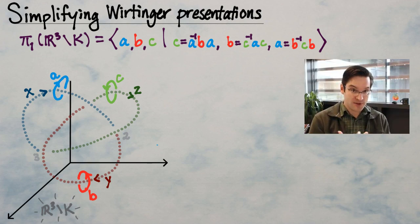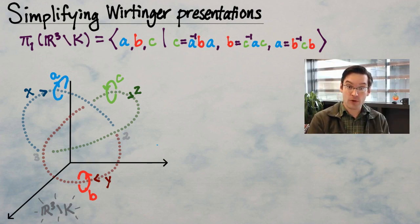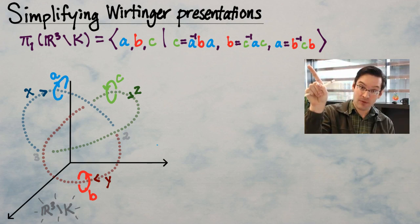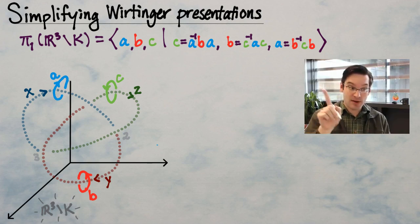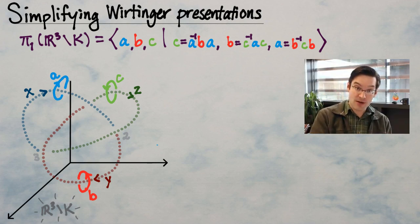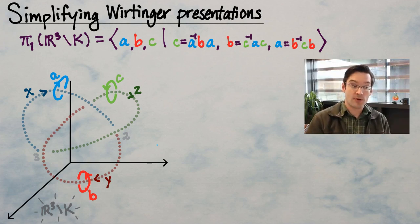What this presentation doesn't do is necessarily illuminate the structure of the group in ways that are useful. Presentations for groups in group theory are notoriously challenging to work with, because they don't always tell us enough about how the elements in this group interact with one another. So we're going to apply simplifications — sometimes called Tietze transformations or Tietze moves.